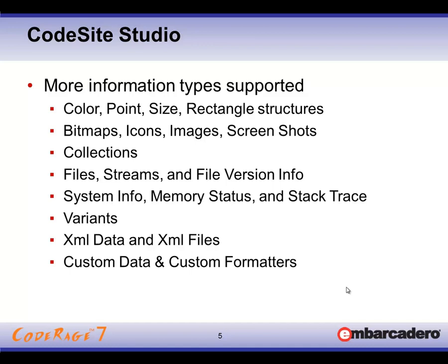First off, there are a lot more data types supported in CodeSight Studio. Core features like points, colors, and rectangle structures — things we use internally all the time — have native support. We have the capability to send bitmaps, icons, and even screenshots of what our application looks like at a given point in time recorded into our log. Collection support is also included, as well as files and file contents, memory streams, system information, stack traces, variant support, great XML data support for both memory streams and XML files, and even the ability to custom format data as you want to see it.